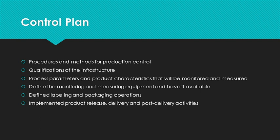The control plan defines the methods and procedures to control production. It should qualify the infrastructure. For example, if you need air pressure to assemble two parts together, what is the range of PSI that should be used? The control plan defines the process parameters and product characteristics to be monitored and measured to ensure product will meet specification and requirements. It also defines how and what equipment to use to monitor and measure, and that the equipment must be available.